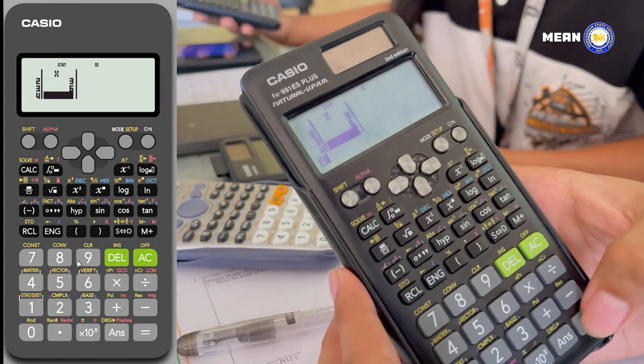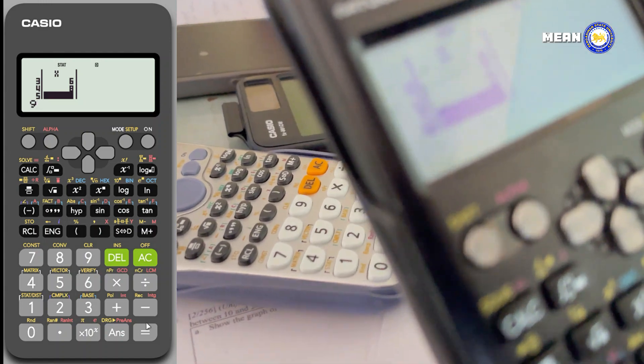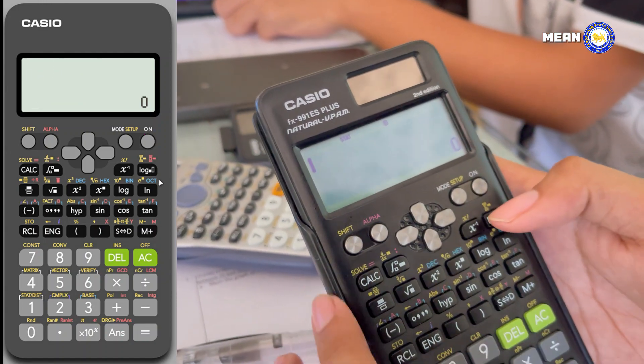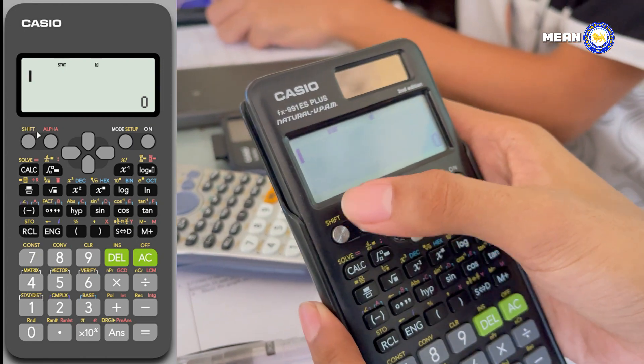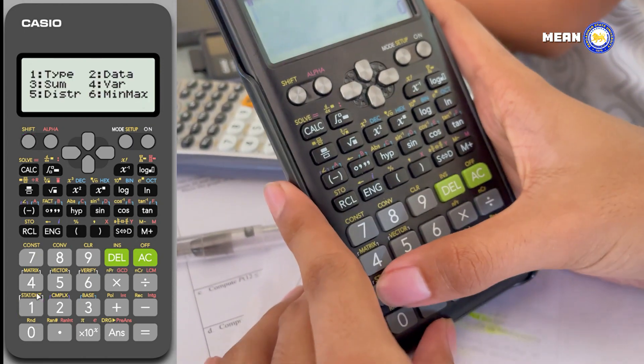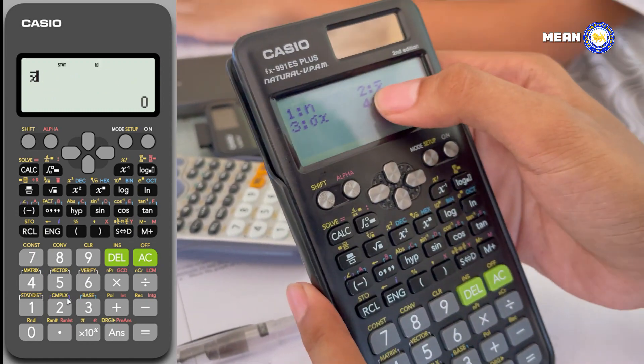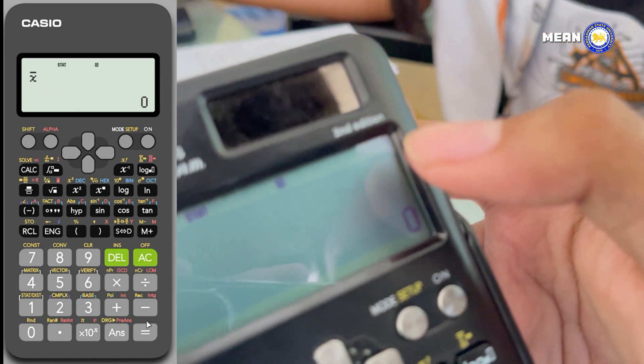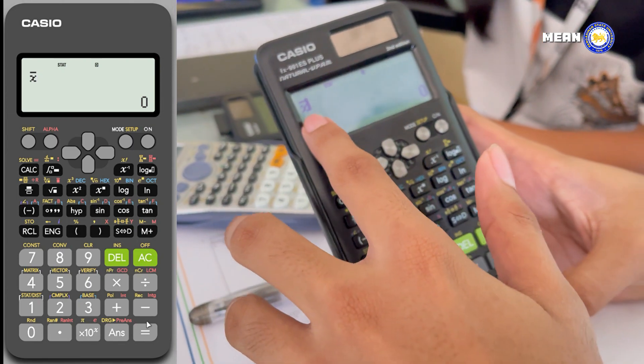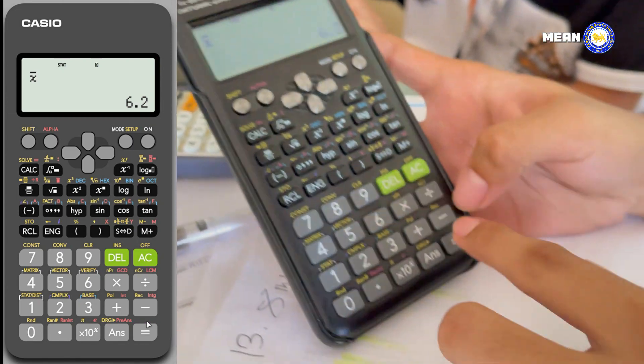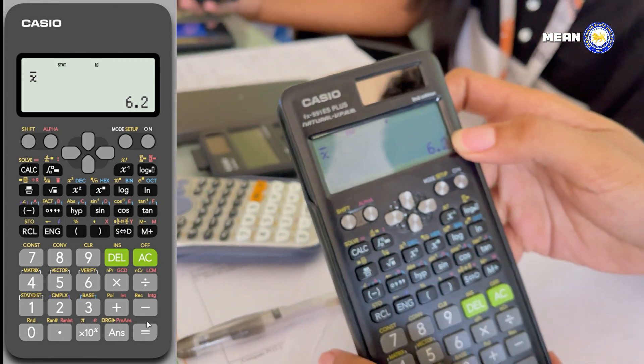After you have input all your data, press AC, then click Shift and 1 to go to the Stat menu. Then press 4, then press number 2, so you'll get the mean of the data. After you have input that, press the equal button to compute the mean and you will get the mean.